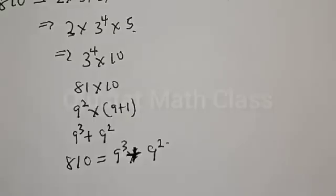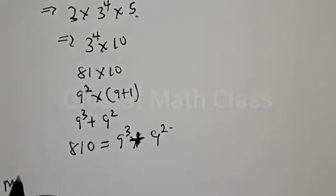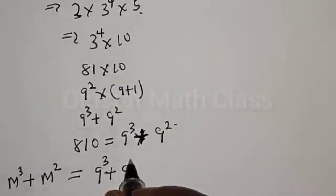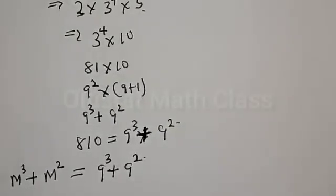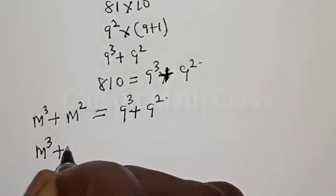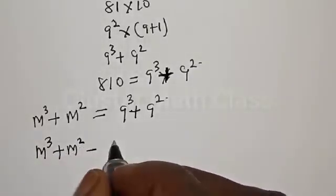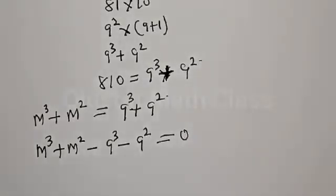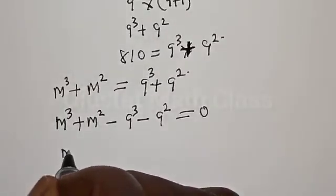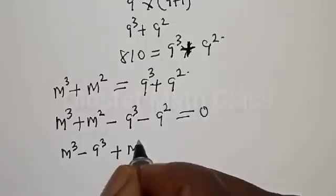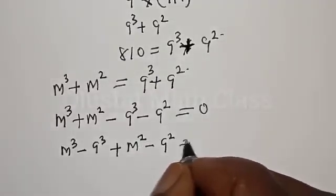Now let's substitute back to the main equation. We have M³ plus M² equal to 9³ plus 9². Let's equate it to zero: M³ plus M² minus 9³ minus 9² equals 0. This can be rearranged as M³ minus 9³, plus M² minus 9² equals 0.